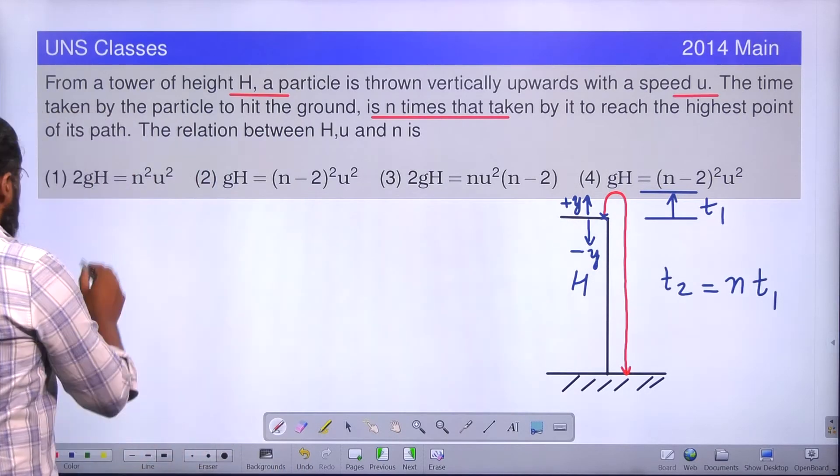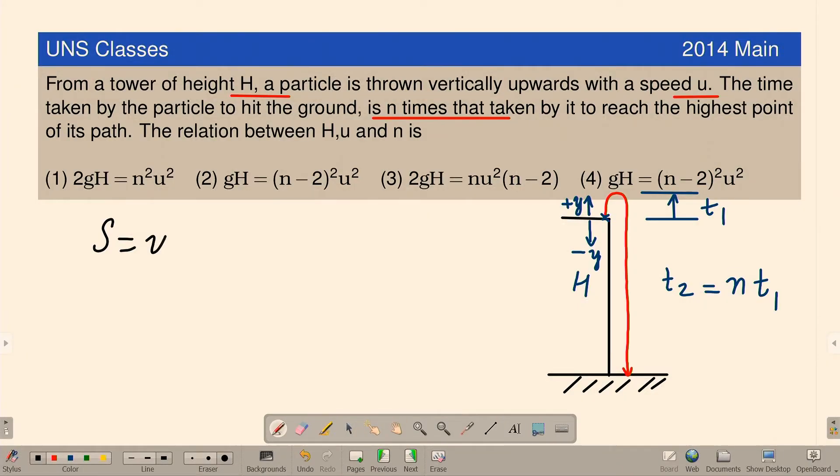How much is displacement? S is equal to UT plus half GT². I am going to apply. H is in the downward direction. Here S is nothing but minus H because H is in the minus Y direction, equals U into total T2 time, minus half GT2 square because the body is moving, the expression is acting in the minus Y direction.